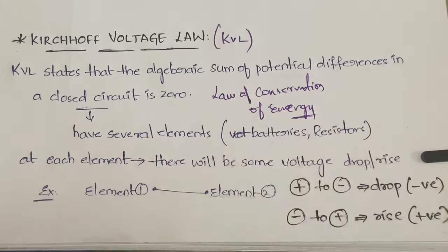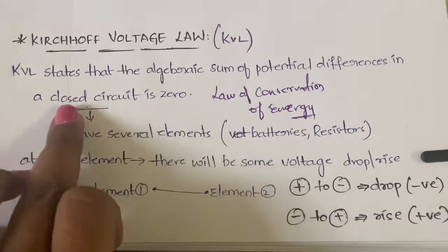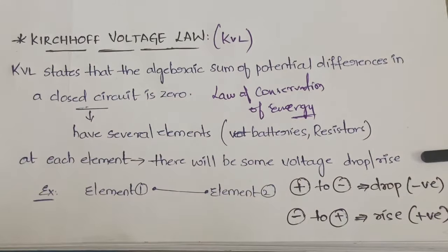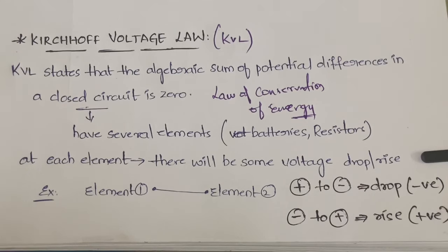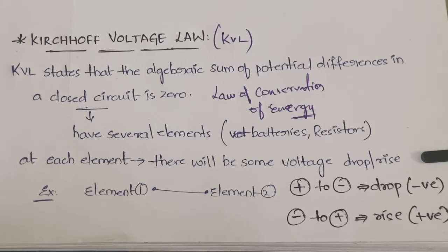KCL is called the law of conservation of charge — we'll discuss that later. A closed circuit will have several elements: it can have batteries, resistors, a fuse, a switch, an inductor, a capacitor, or any basic circuit element. At each and every element there will be a voltage drop or voltage rise — the potential difference will either drop or rise.